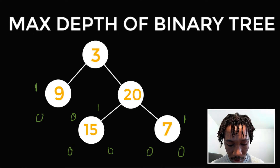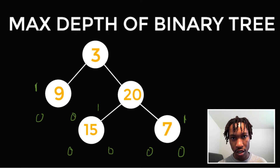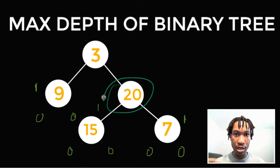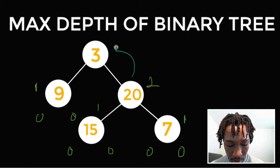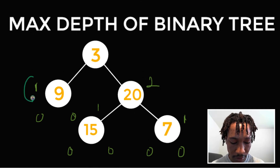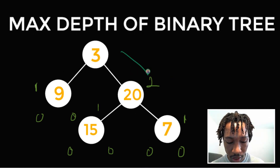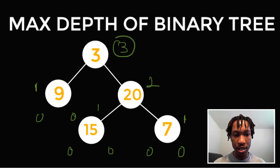We get back up the recursive tree to 20. At 20, we have the length of its right child path and its left child path, and we find the maximum of those. They're both the same length, so we take one of them plus one, considering 20 is one node above them — one plus one is two. So 20 returns two. Then we get up to the recursive call all the way to three. For three, we take the maximum of its left and right child paths, which is two plus one — three is one node above — so two plus one is three. Three returns three, which is the maximum depth of the binary tree.